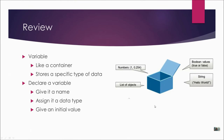A variable is like a container. It stores a specific type of data and you can't mix them. So if you declare a variable as an integer, then it has to store only integers. If you declare it as decimals, then it has to store decimals. If it's a string, it has to be strings. Once you declare a variable with a specific type, it can only be that type of data.